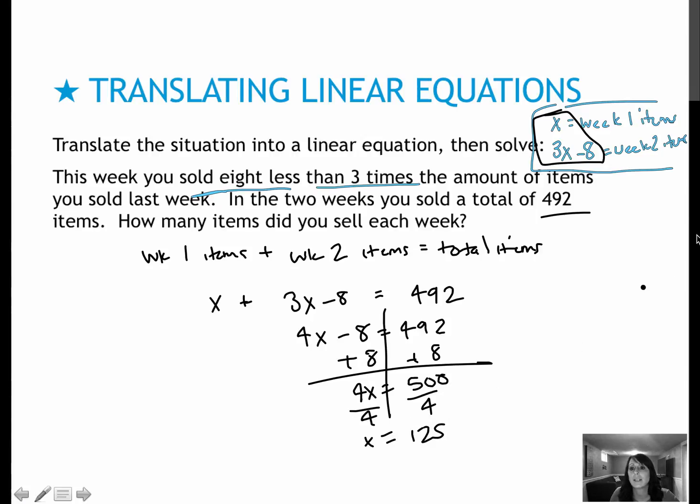So what does that tell me? That tells me week 1, I sold 125 items. What did I sell week 2? I can do it a couple of different ways, but one easy way is 3 times 125 minus 8, which is 375 minus 8, which is 367. Not a bad idea to double check by adding those together to make sure I get 492, and I would. And of course, I would write the sentence, In week 1, or last week, I sold 125 items. In week 2, I sold 367 items. Great job.